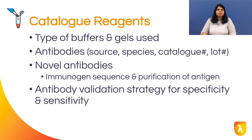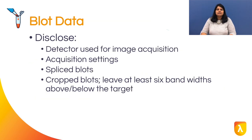For novel antibodies, provide the immunogen sequence used to generate the antigen and how the antigen was purified. List the antibody validation strategy used to validate specificity and sensitivity. Avoid simply using past publications as a reference for validation, and try to provide all the latest information to the reader. Disclose all information to ensure repeatability and reproducibility.